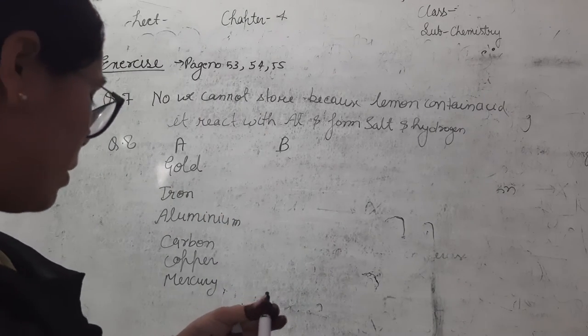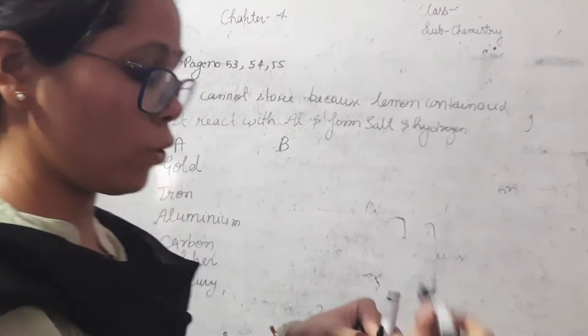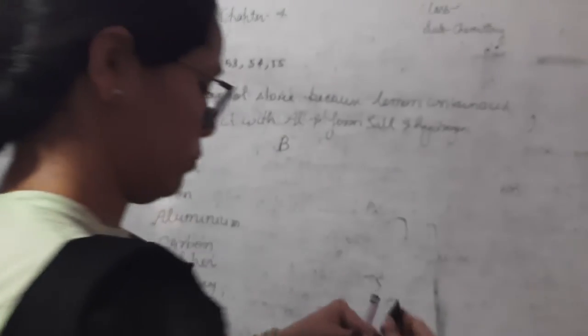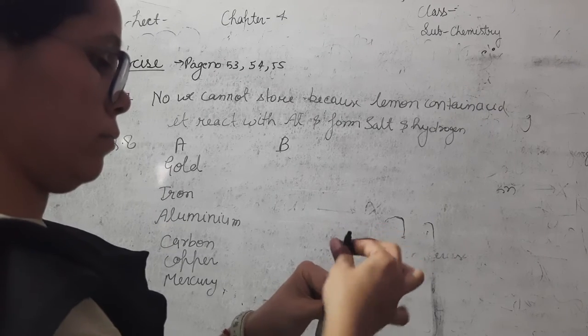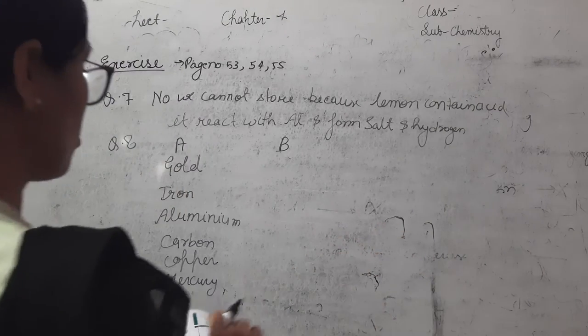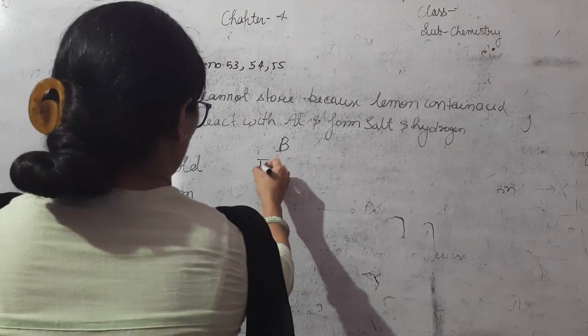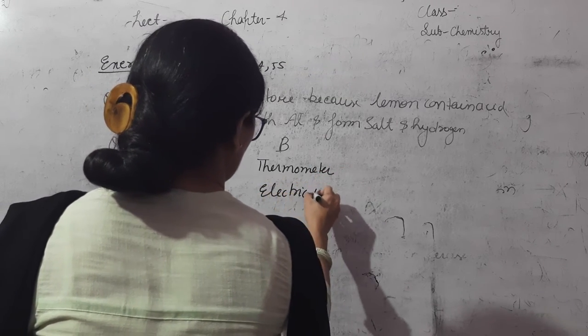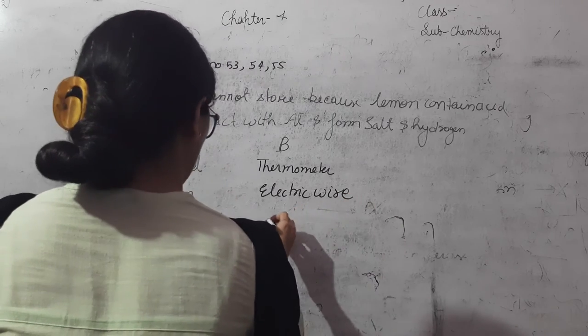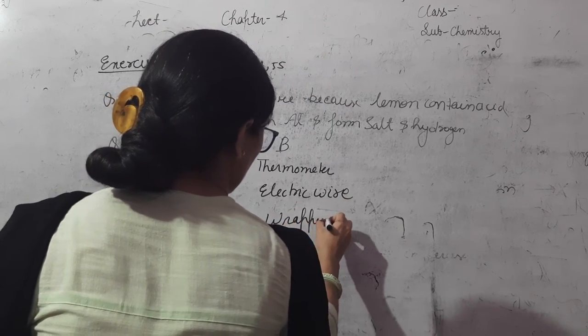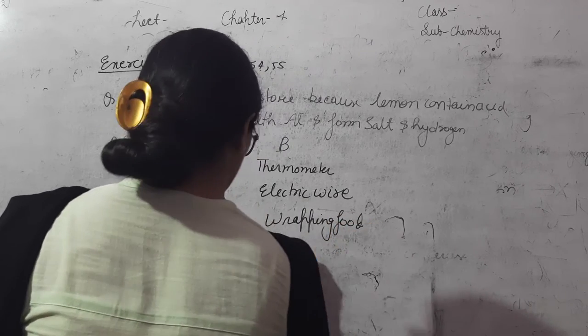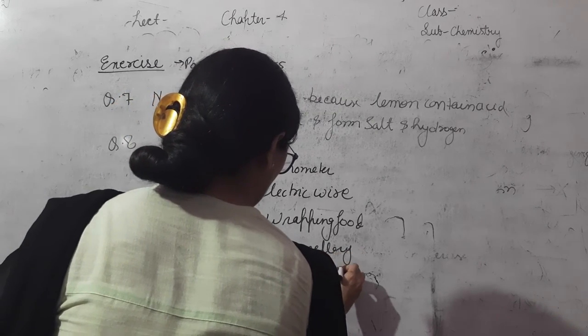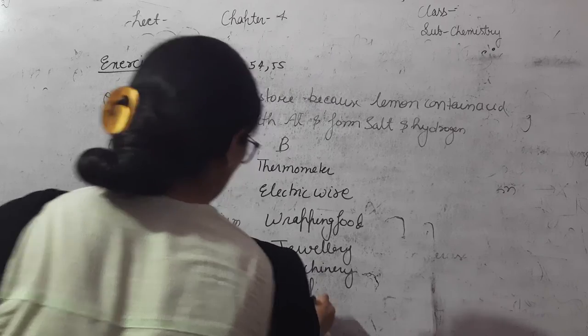In second column the given is thermometer, electric wire, wrapping food, jewelry, machinery, and last one is fuel.